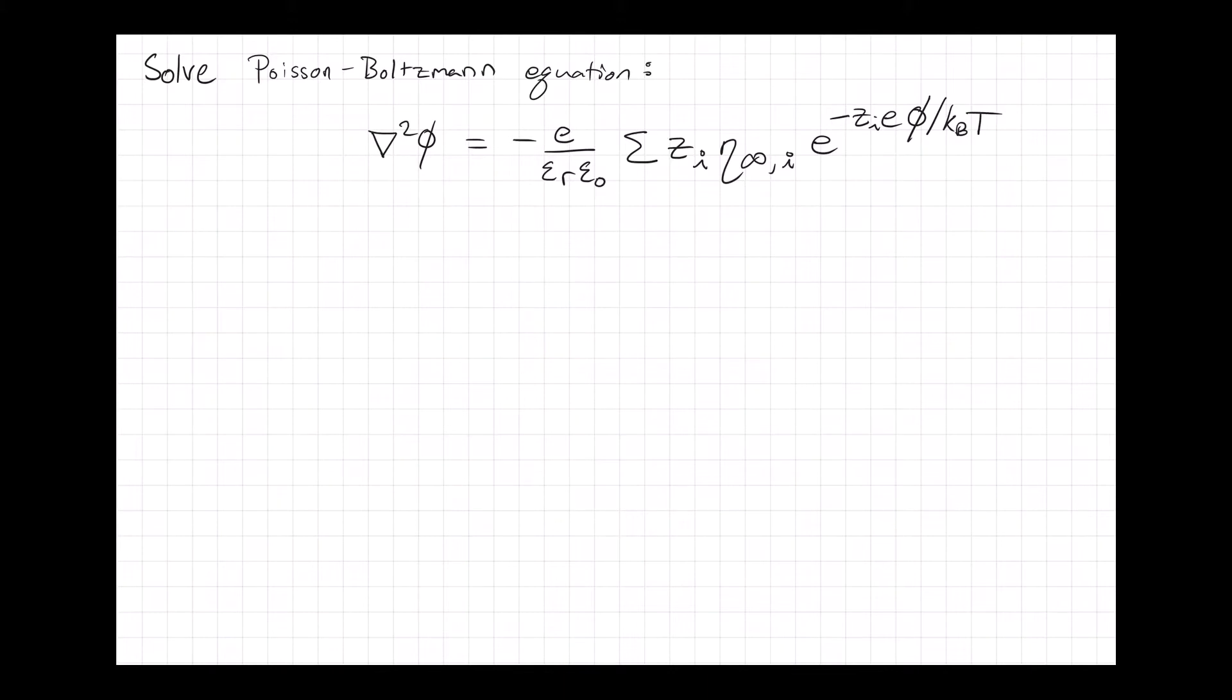But that charge imbalance actually contains a term that has the electrostatic potential in it inside of an exponential. We can identify two boundary conditions: one being that the electrostatic potential in the bulk is zero.